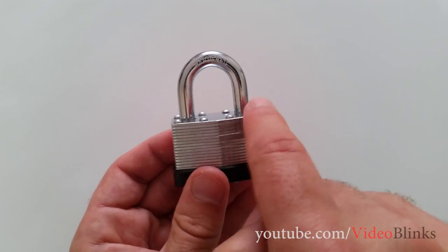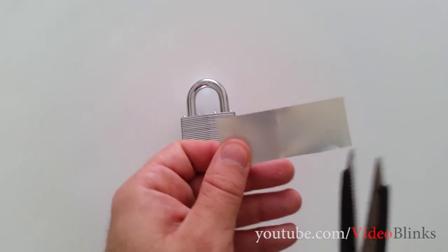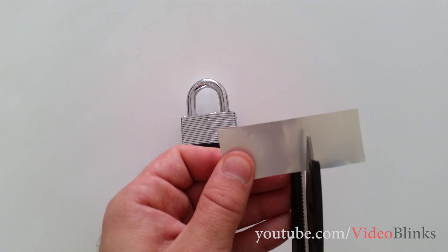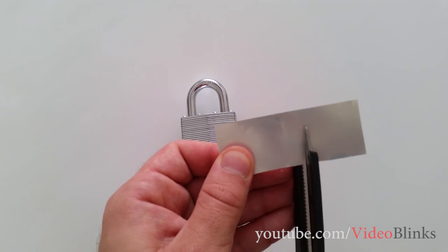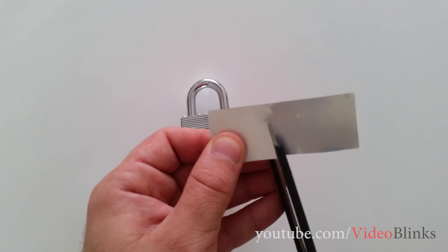For that reason we are going to have to make two shims for each side. Just going to cut it like this, and we are going to cut it like this, kind of V-shaped.